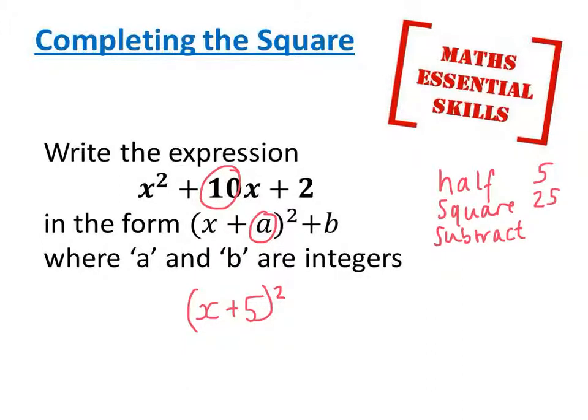And finally I subtract that number. At the moment I've got positive 2, and when I subtract the 25 I end up with negative 23. That's the end of the question. The a was 5, and the b was negative 23.